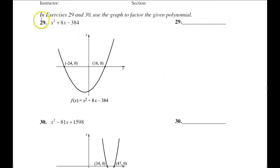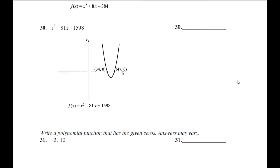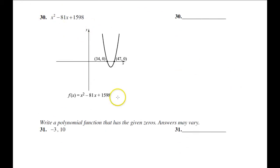In this example they're showing you the graph and we want to find the zeros. Here the zeros are x equals negative 24 and x equals positive 16. If you were to graph that, that's what it would look like. Same approach for the next: find the zeros, so x equals 34 and x equals 47. We are finding the zeros.